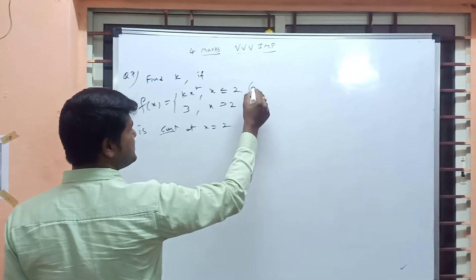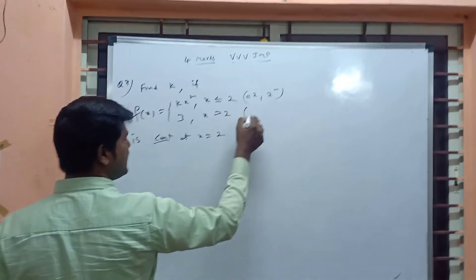Less than or equal to 2 is equal to 2 and 2 minus, greater than 2 means 2 plus.